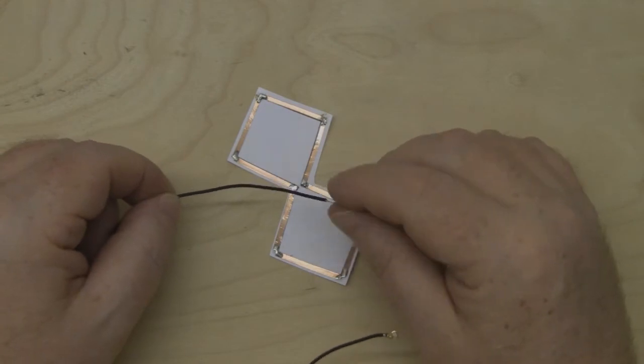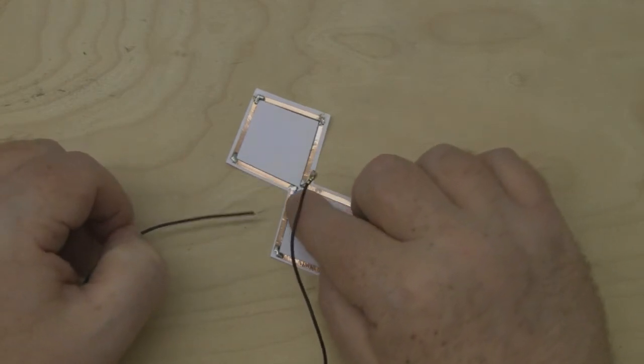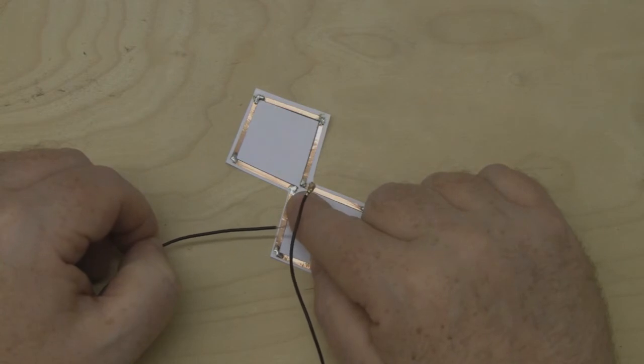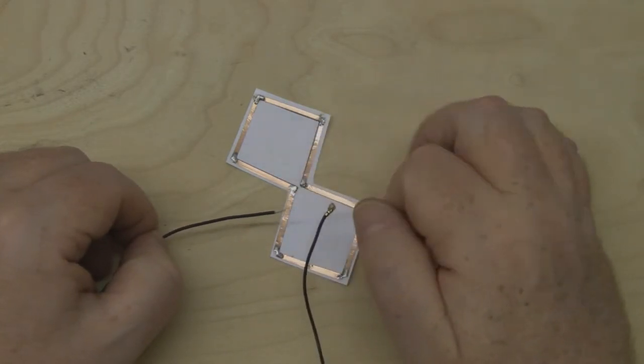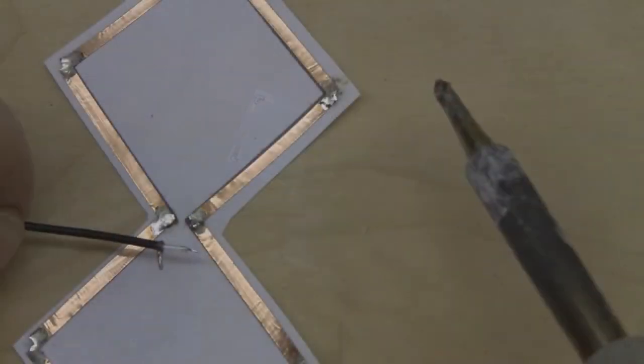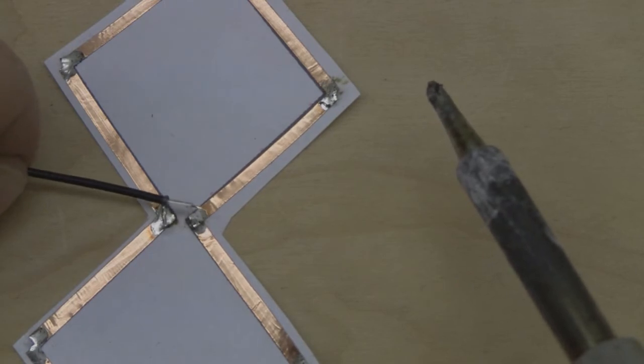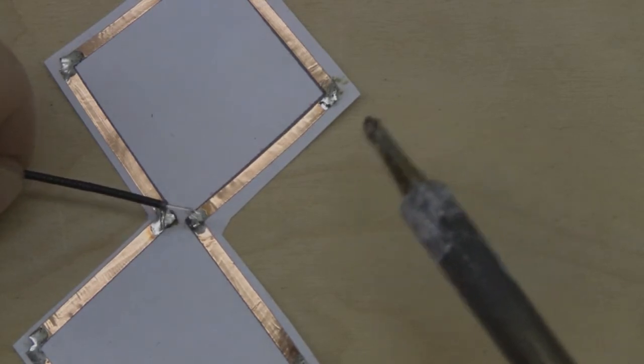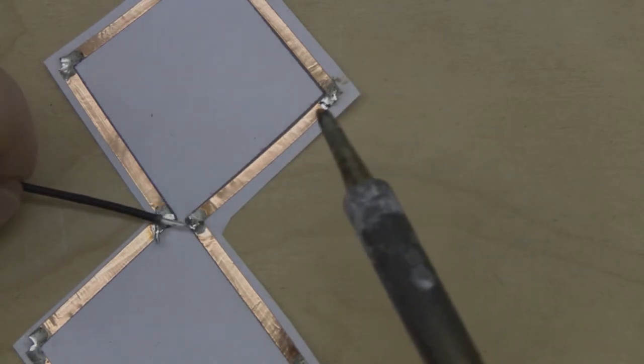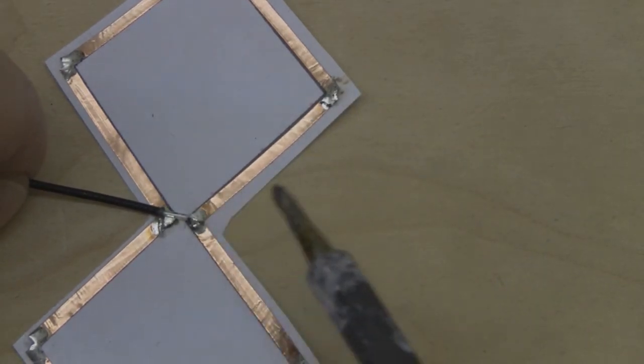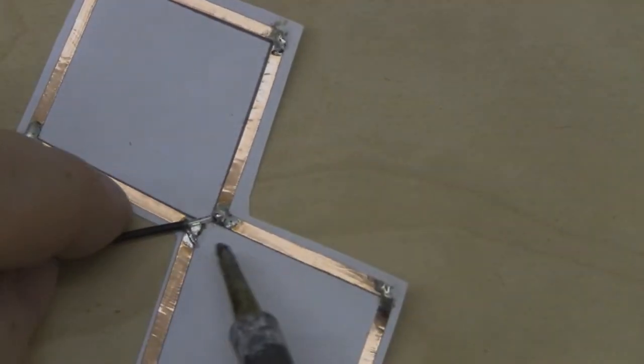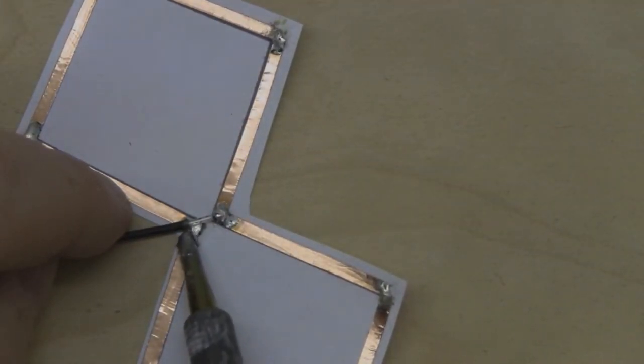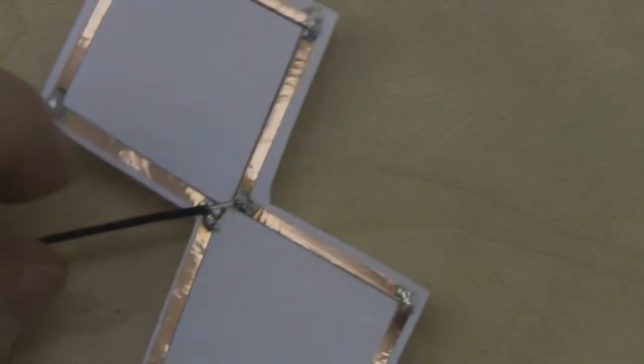I'm going to strip this back and solder the center connector to one side and the outer braid to the other side. This design of antenna is all looped together, so it's very easy to make. I've cut the coax back and pre-tinned the ends, cut them to the length I'm happy with. I've got a little bit of solder on the end of my iron, and I'm going to put the center connector in place first, then the outer connector.